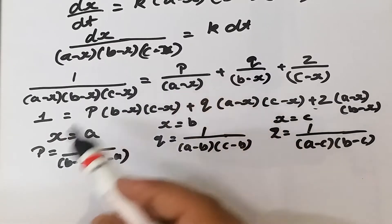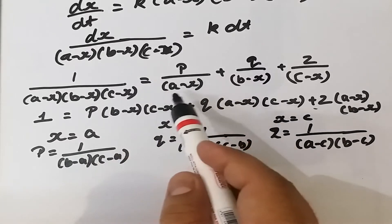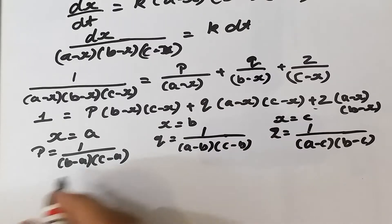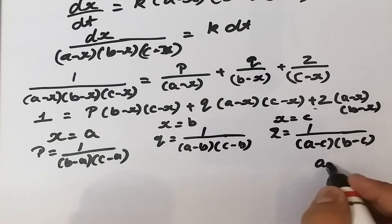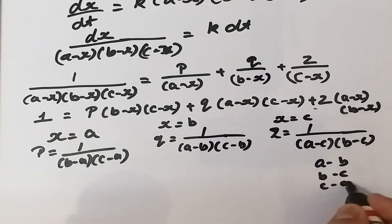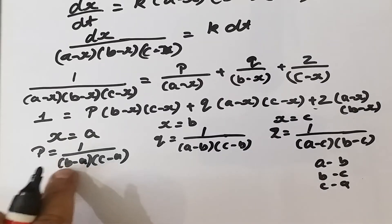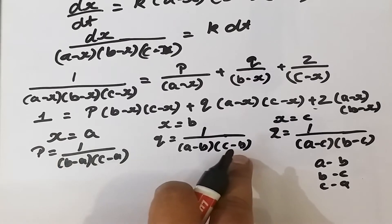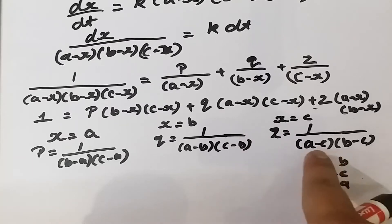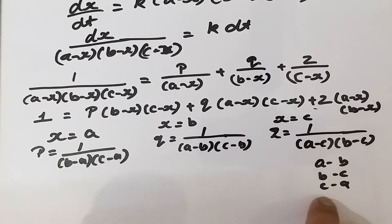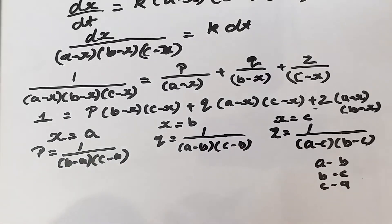We can rearrange all denominators into the standard form using (a minus b), (b minus c), and (c minus a). For example, (b minus a) becomes minus(a minus b), and (c minus b) becomes minus(b minus c), so all terms will carry a negative sign in front.